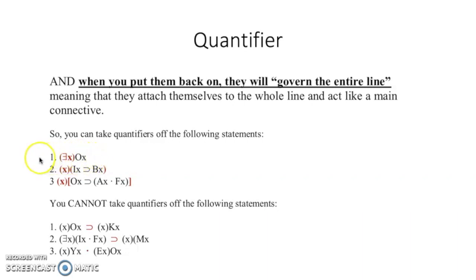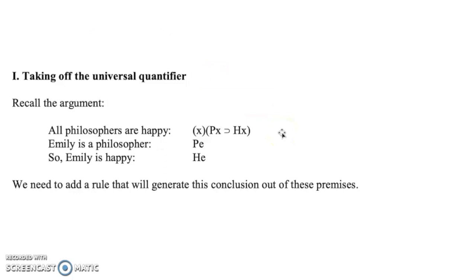So you cannot take off quantifiers of the following type of sections. This is what we were just talking about. So line one, you're gonna have to separate those out first. Line two, you're gonna have to separate those. And line three, separate those as well. So essentially, whenever you have them mixed, so you have universal and universal and your main operator is a horseshoe, just know you're gonna have to separate them off.